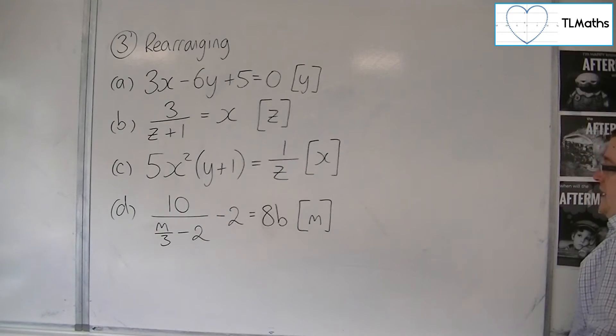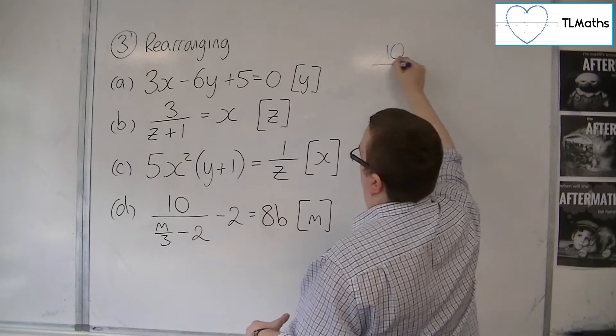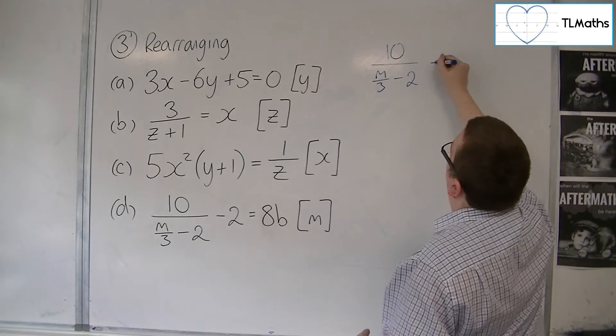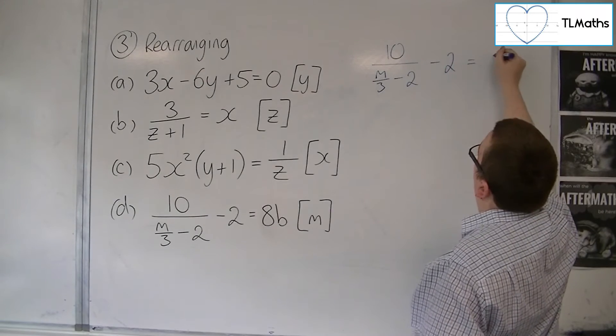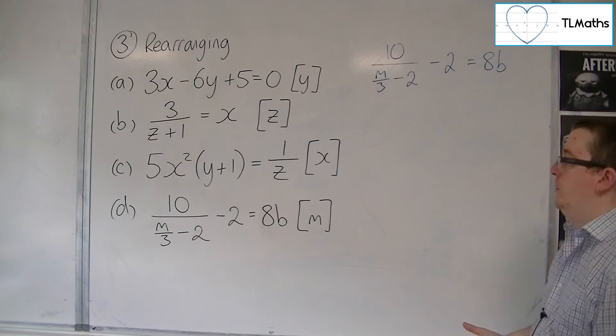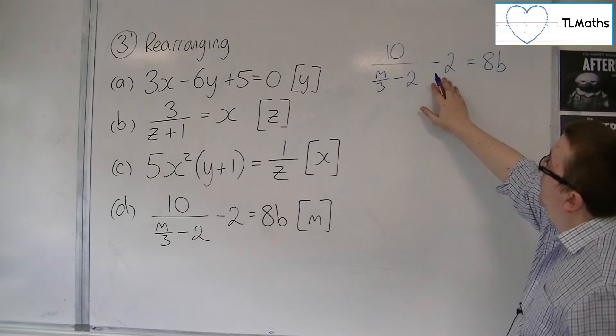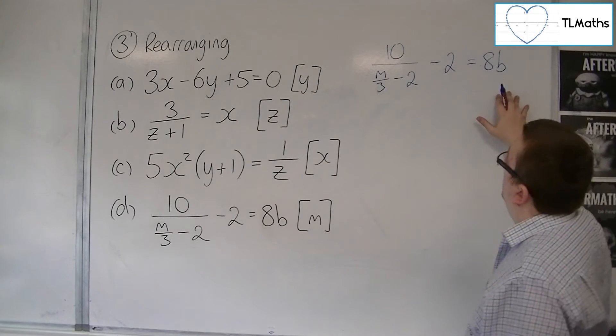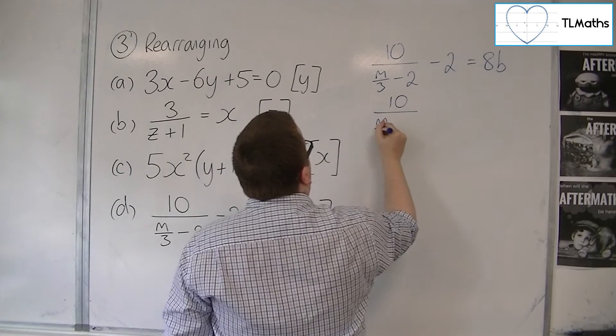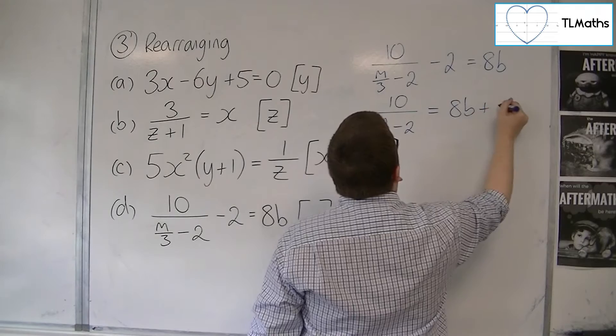Now, for D, we have 10 over M over 3 take away 2, take away 2 is equal to 8B. And we want M to be the subject of this formula. So the first thing I would do is I would add 2 to both sides. So I would have 10 over M over 3 take away 2 is equal to 8B plus 2.